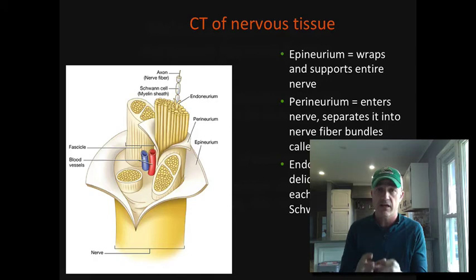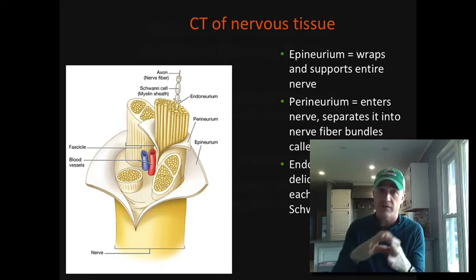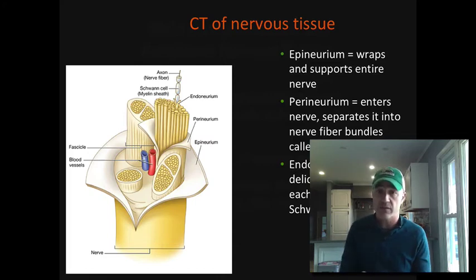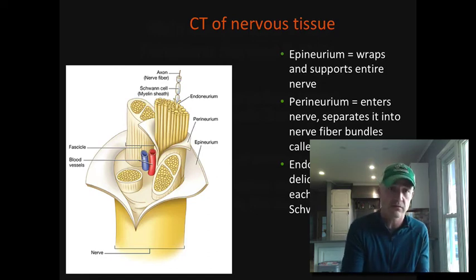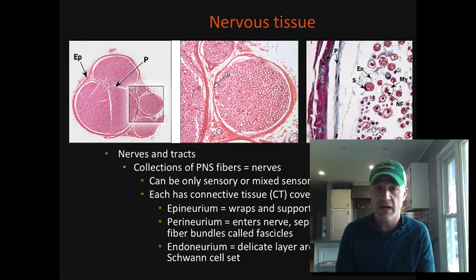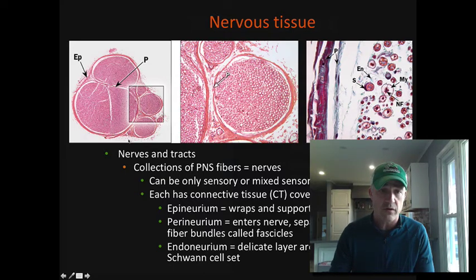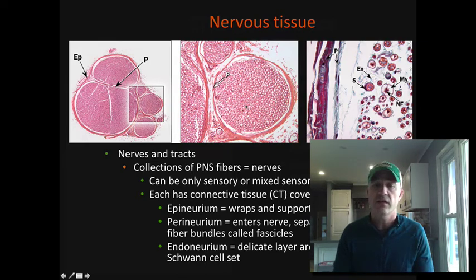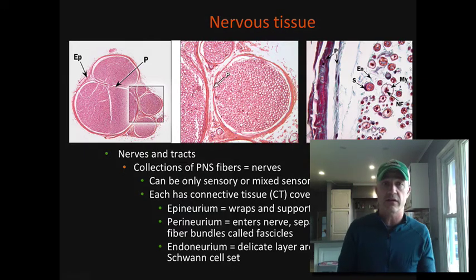Epineurium is a dense regular connective tissue wrapping that goes around the entire nerve. Within that, you're going to have bundles of axons grouped together called a fascicle. Perineurium surrounds each fascicle, and then each axon is going to have areolar connective tissue surrounding it — that is the endoneurium. Much like what we saw with the muscle fiber wrappings in skeletal muscle. You can actually see these under the scope: you can see bundles — each of these would be fascicles — epineurium going around the whole thing, and perineurium around each fascicle.